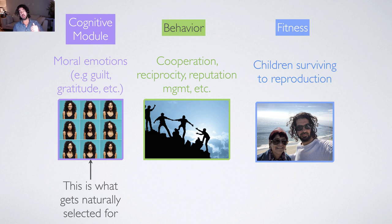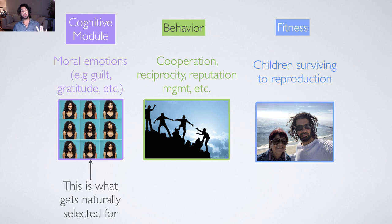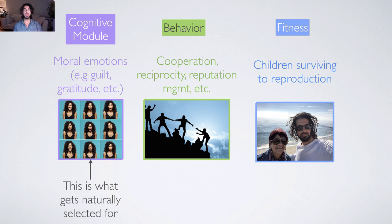If you outfit an organism with a sense of shame or guilt when they do something perceived to be immoral, you've outfitted them with a negative motivational force to avoid that type of misstep in the future, and to pursue reparative behaviors that will put them back into good standing in the group. Again, what you've done is selected for cognitive modules which motivate people towards the behaviors that are going to allow them to be most successful.